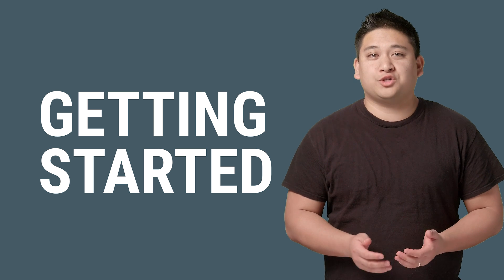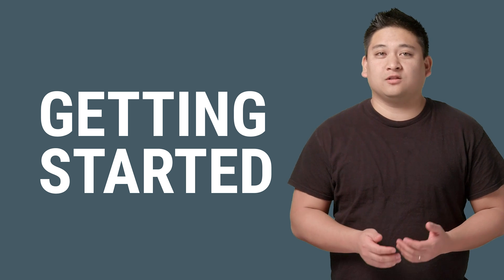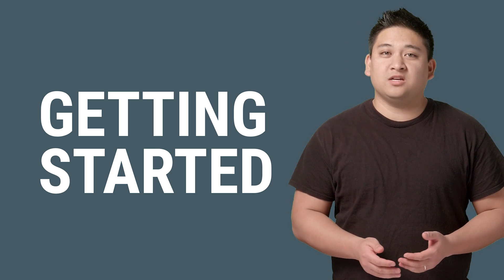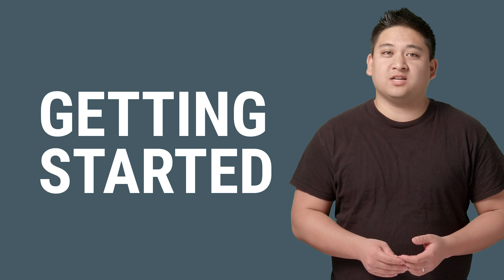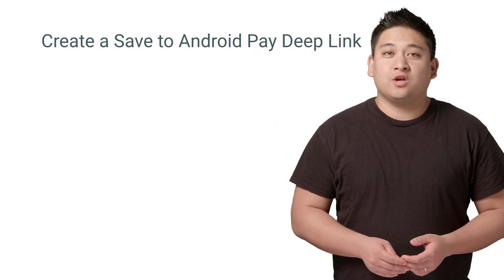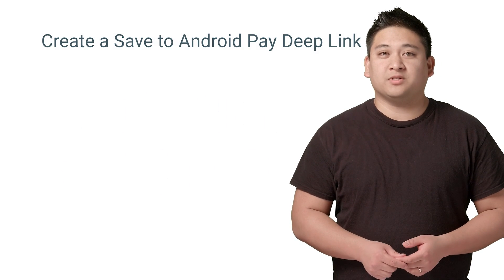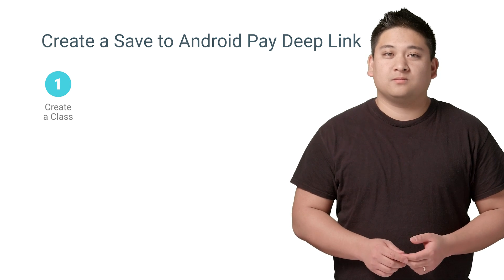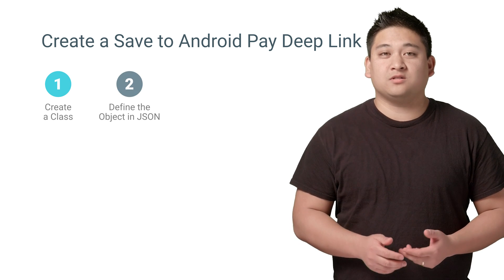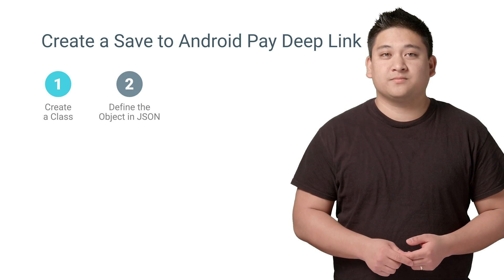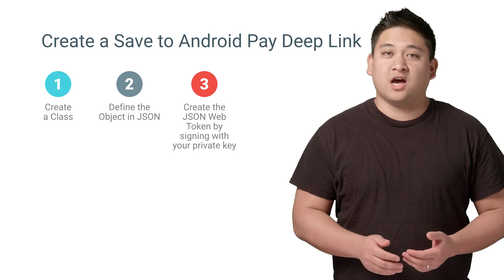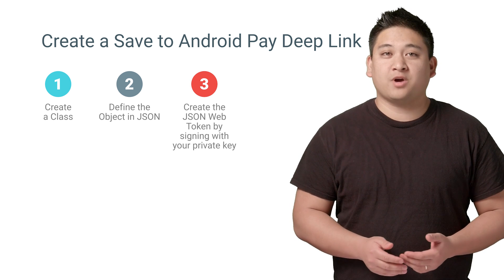To get you started, I'll show you how to digitize a loyalty card and add it to an email so that it's super easy for a customer to save it. First, you'll need to create a Save to Android Pay Deep Link. Step one: create a class. Step two: define the object in JSON.